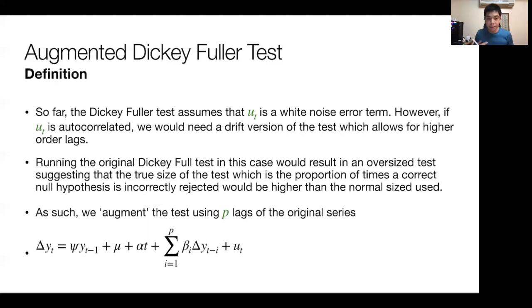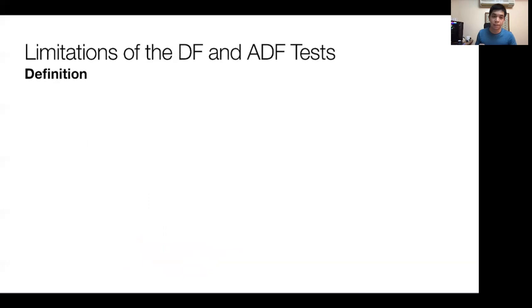The true size of the test, which is the proportion of times a correct null hypothesis is incorrectly rejected, would be higher than if the normal size had been used. As such, we need to augment the test using some lag order, some number of P lags or autoregressive lags of the original series. This is what's more commonly used with regards to the Dickey-Fuller test, the ADF test. It's still a difference equation like before, but we include past autoregressive lags of the difference term as well as a time or drift parameter and an intercept.